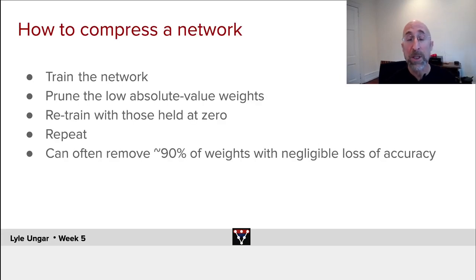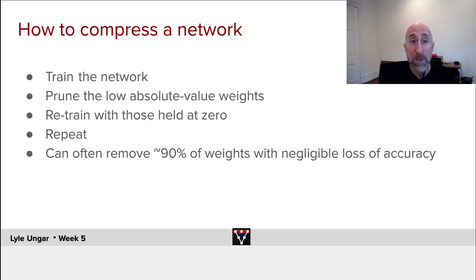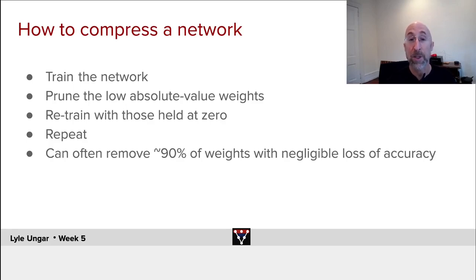So, how do we compress a network? The simplest way: train up your big network, make it fit optimally, then go through and find all of the weights which have a small absolute value — below some threshold, maybe the lowest 20% or the lowest 80% of the weights in size — zero them out, hold them to zero, and then retrain the network having those weights zeroed out. And often you'll do this iteratively — run this five or ten iterations, each time zeroing out the smallest weights.